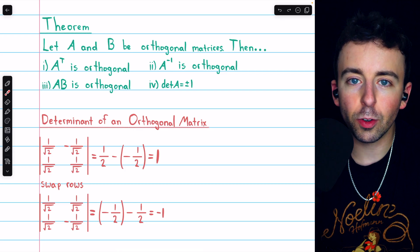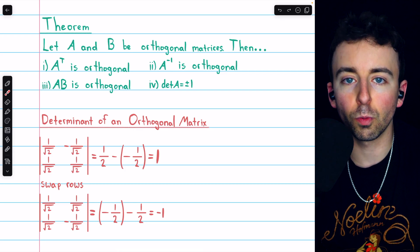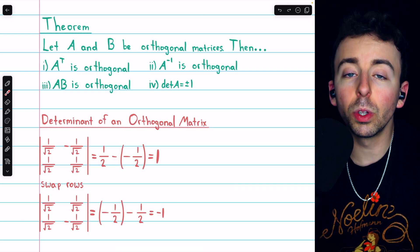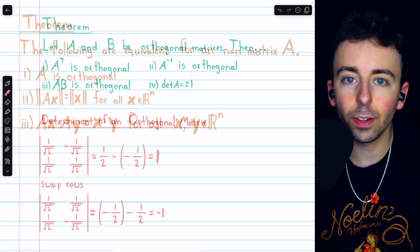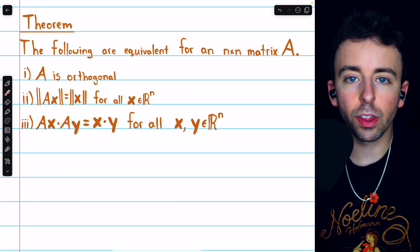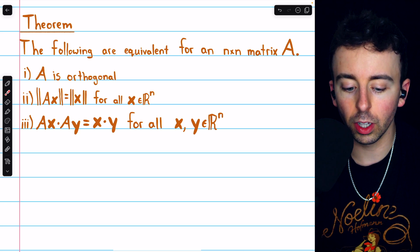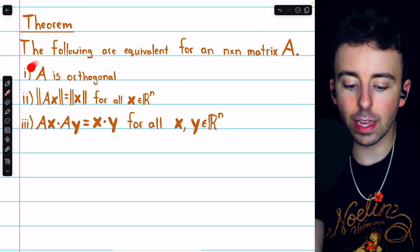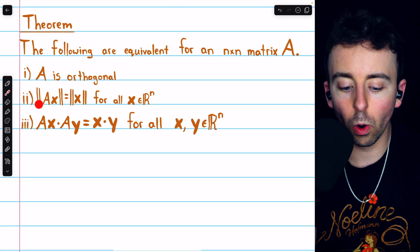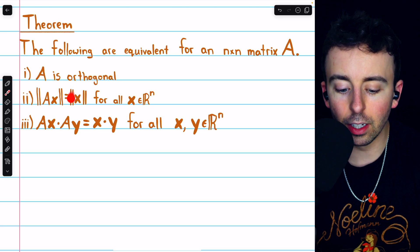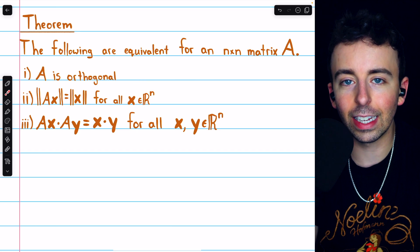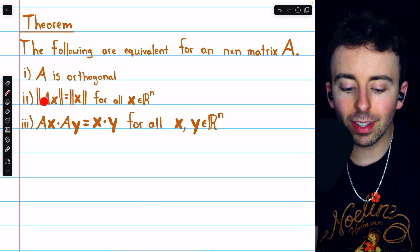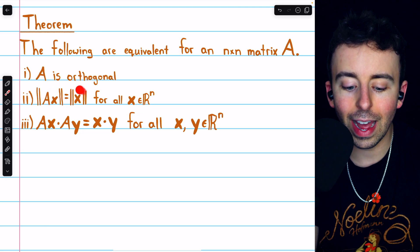Note that swapping rows in a matrix doesn't change whether those rows form an orthonormal basis. Hence swapping rows of an orthogonal matrix will not change the fact that the matrix is orthogonal. This last theorem sheds light on the orthogonal transformation matrices seen earlier. The following are equivalent for an n×n matrix A: A is orthogonal, and the norm of A times x equals the norm of x for all x in Rⁿ.